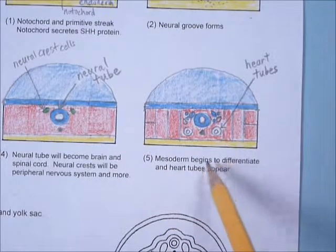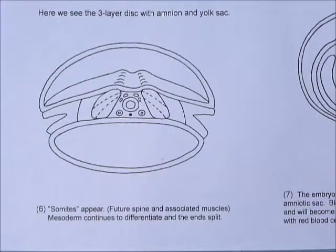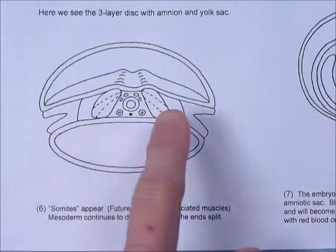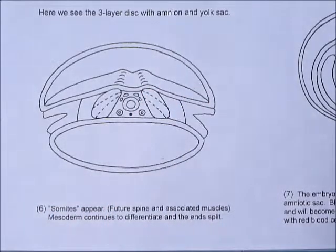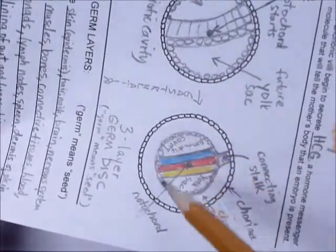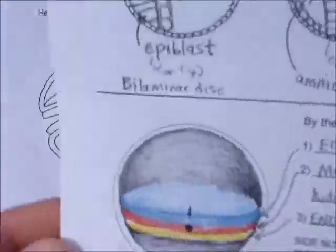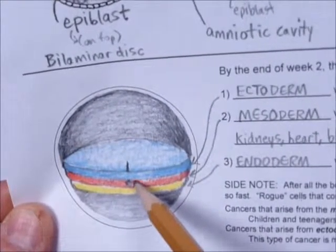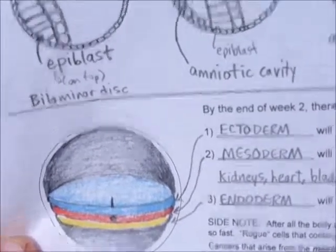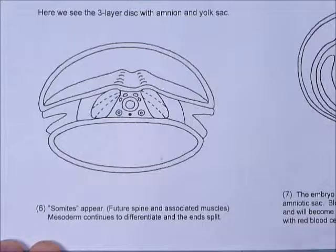The note here says: mesoderm begins to differentiate, and heart tubes appear. That's the most important thing that happens in this step — those heart tubes appearing. Before we start labeling the next picture, let's go back and look at where the three-layer disc was attached to the amnion and the yolk sac. Remember we had this amniotic cavity here and the yolk sac, and the three layers. We've already seen what happens to the three layers — we tipped it like that — and we took a cross section and we've been looking at it. But in the past few pictures we haven't seen the amnion or yolk sac, so we're going to put those back in.